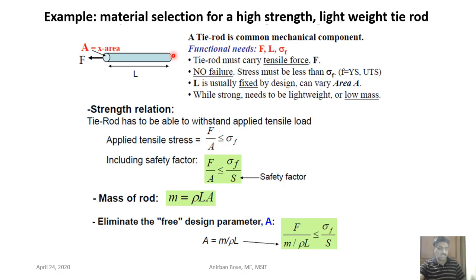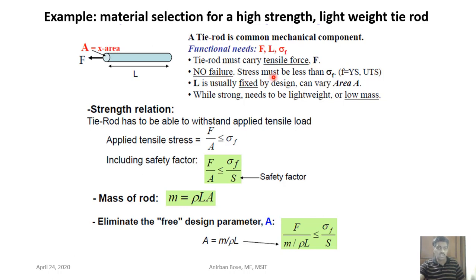The functional needs are force F, length L, and failure stress σF. The failure stress can be the yield point or ultimate strength — it is some kind of strength of the material. The tie rod must carry tensile force F with no failure, so the stress must be less than σF. Thus F/A ≤ σF/S, where S is the factor of safety. The length L is usually fixed by design, so the free variable is the cross-sectional area A.